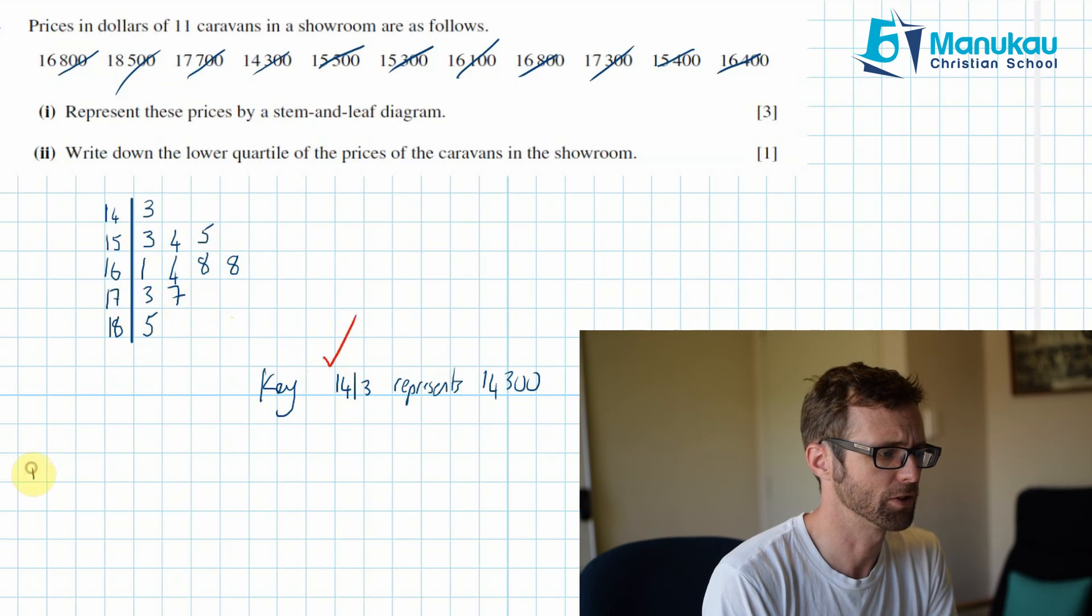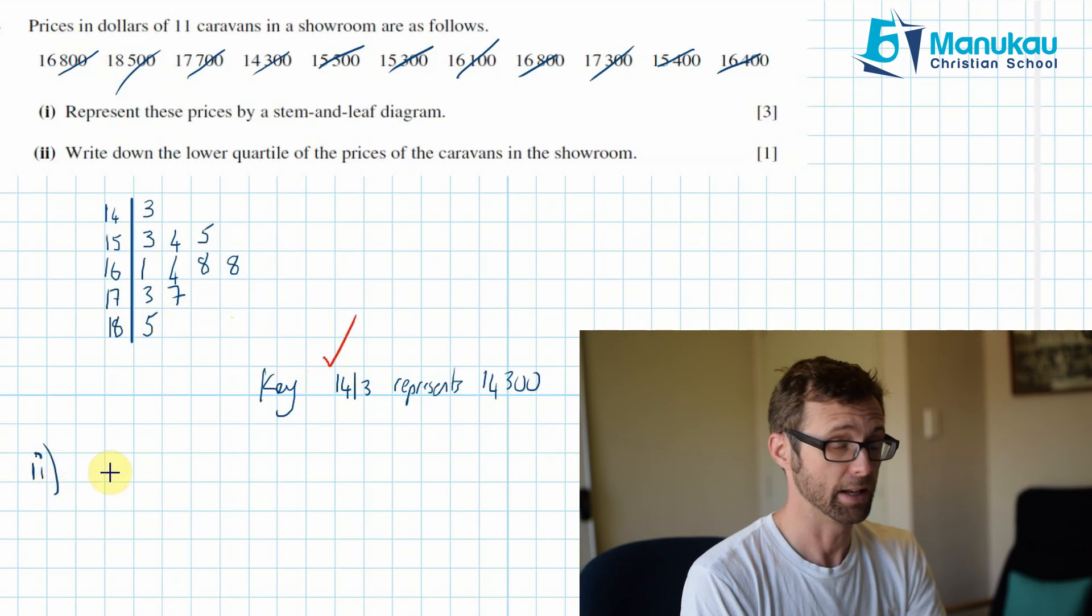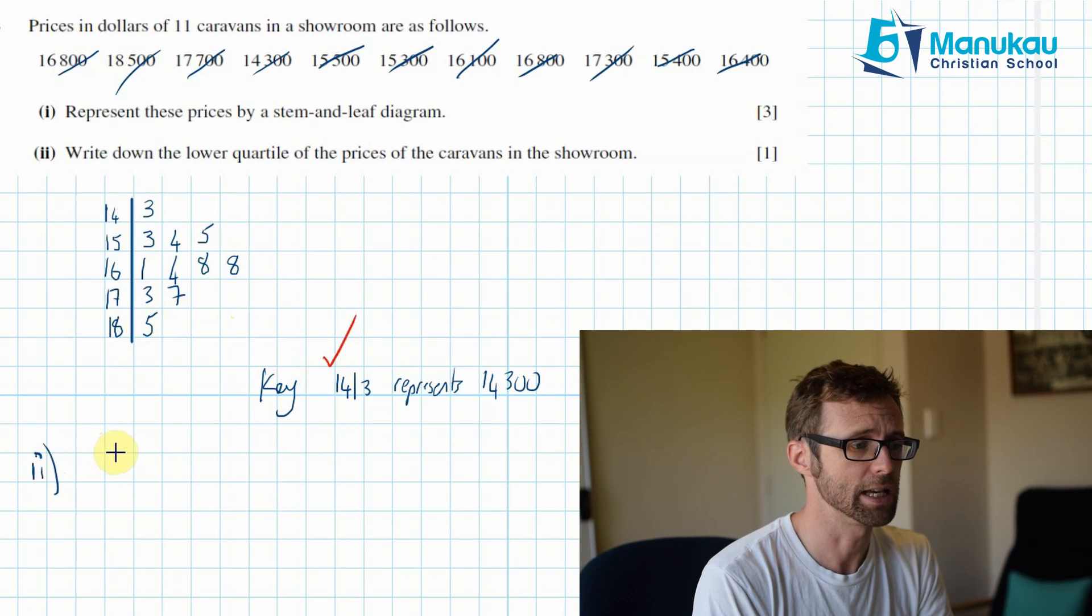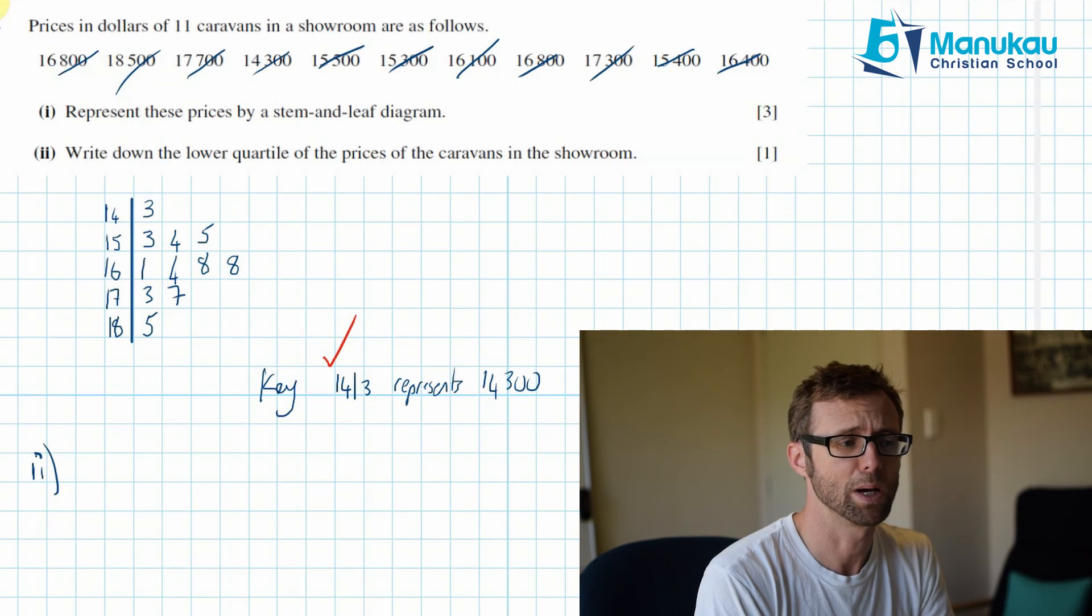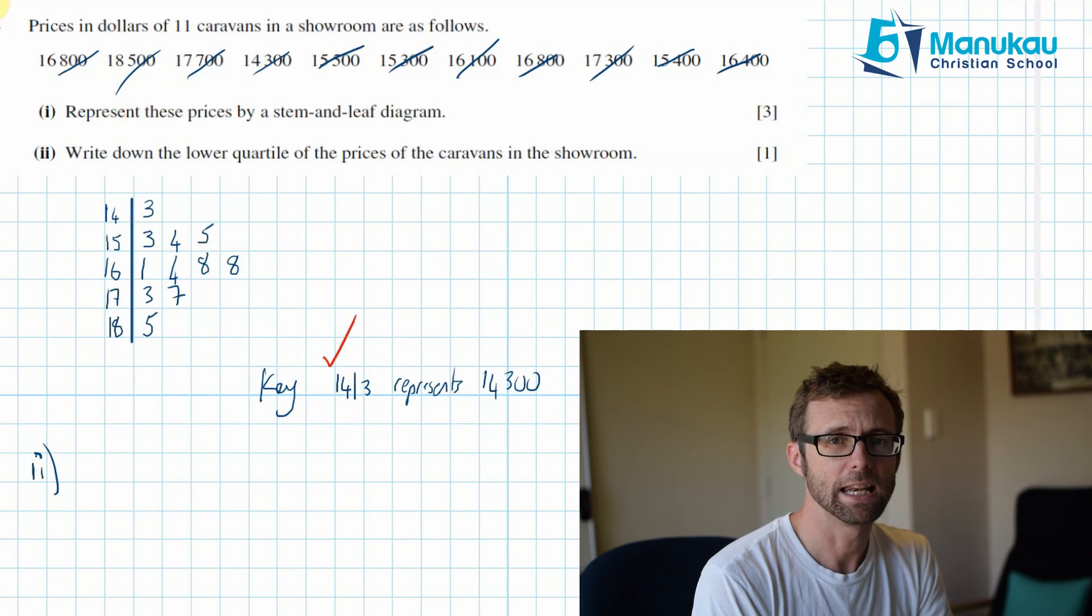For part two of this question, we have to work out the lower quartile of the prices. So when I'm doing this with a stem and leaf, I first of all want to find my median. There are 11 items of data. So we go 11 divided by 2, which is 5.5.